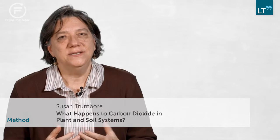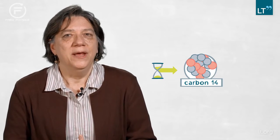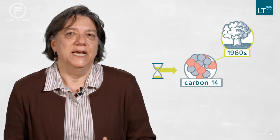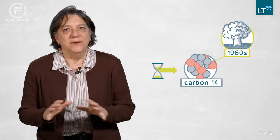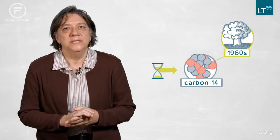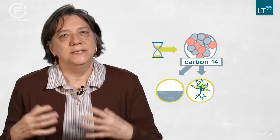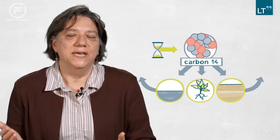To understand how carbon moves through systems and how long it takes, we need something that acts as a clock. The clock that we use is carbon-14, an isotope of carbon that was made by atmospheric weapons testing in the 1960s. The weapons testing approximately doubled the natural levels of radiocarbon in the environment. It's dissolved in the ocean, it has been taken up by plants, passed on into soils, and ultimately returns back to the atmosphere.